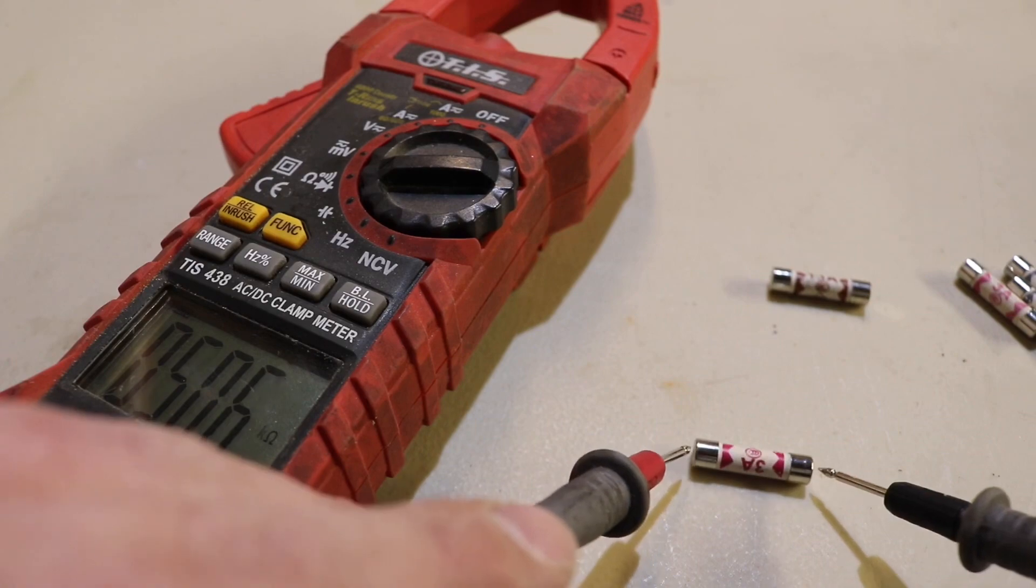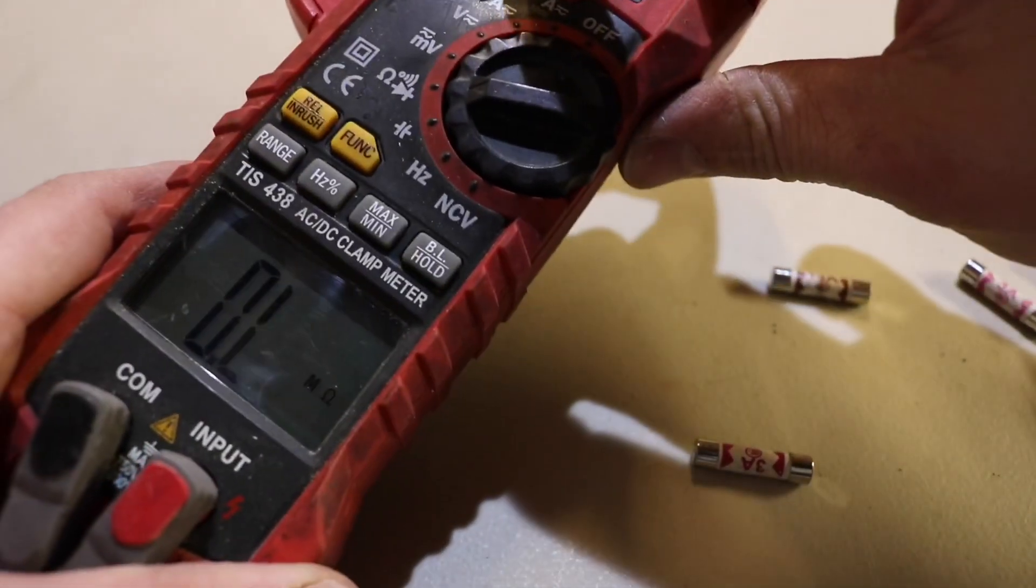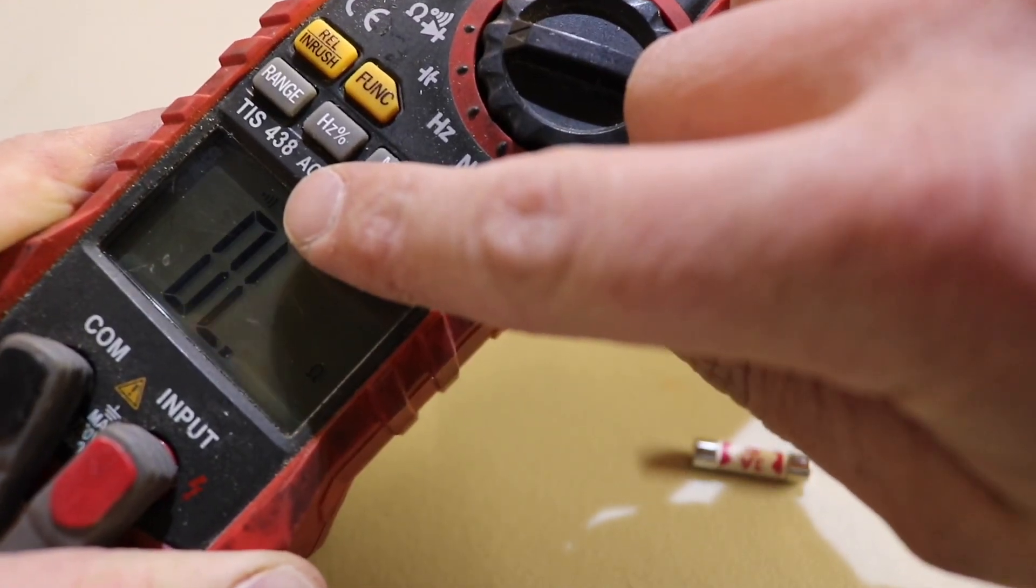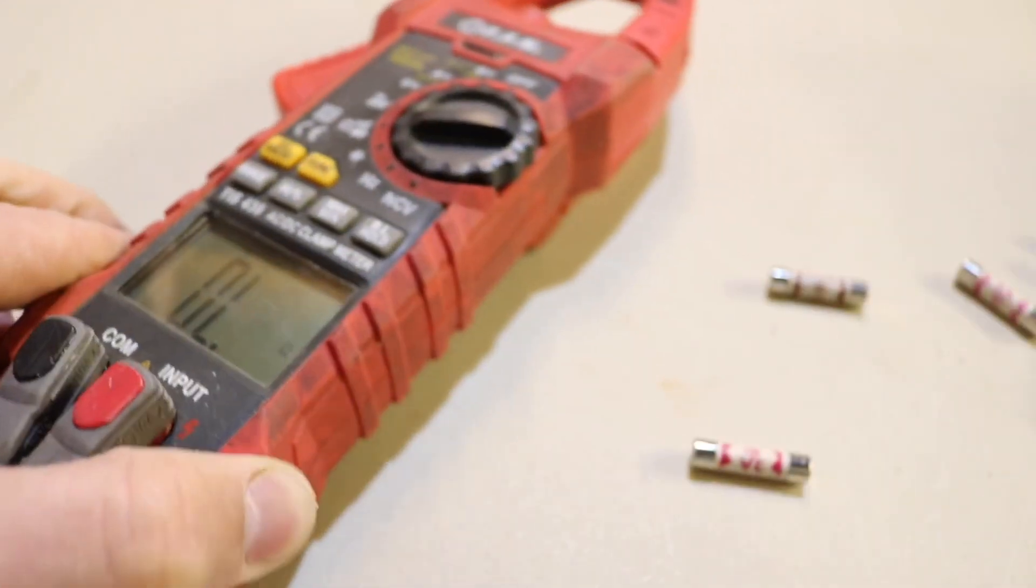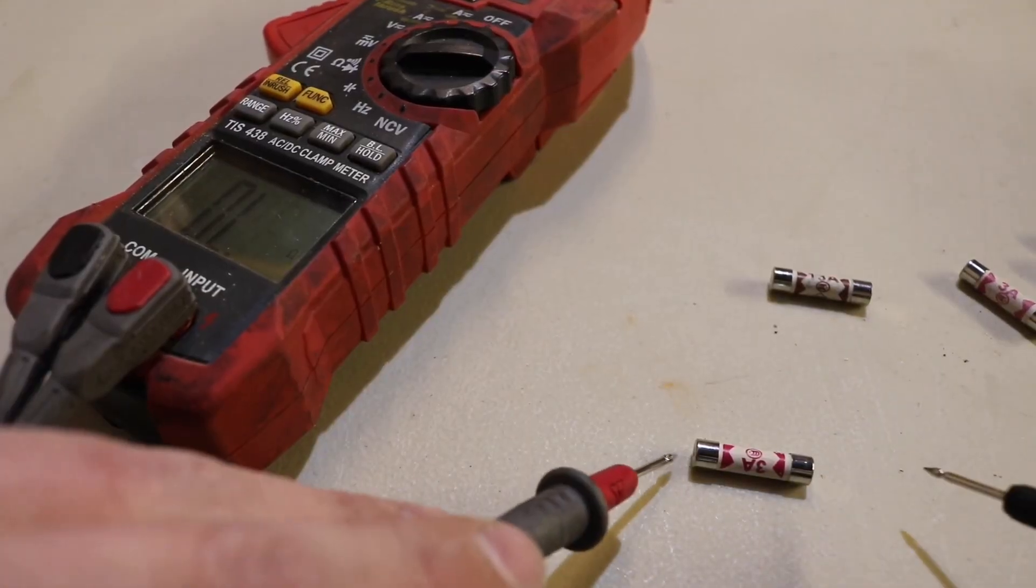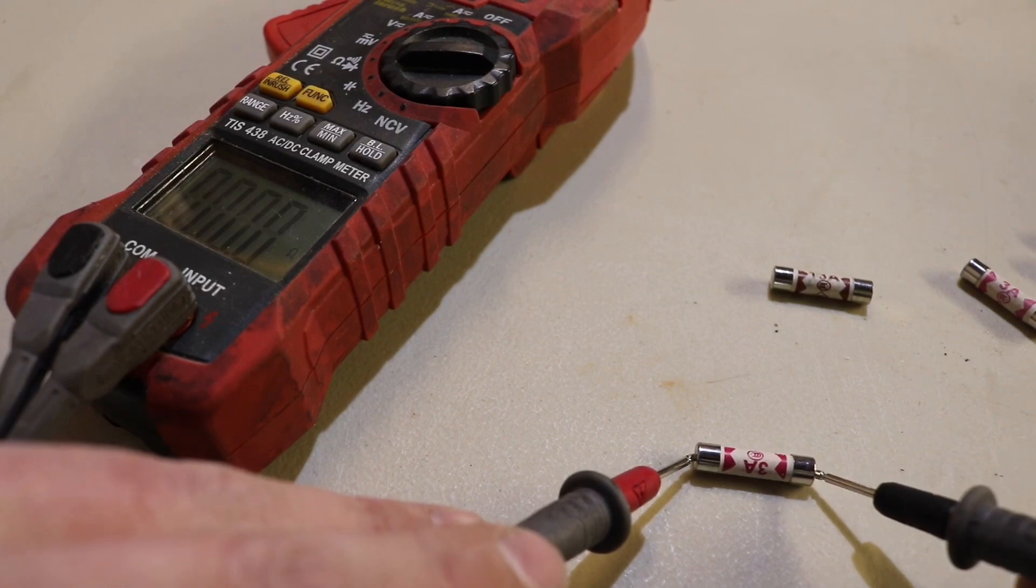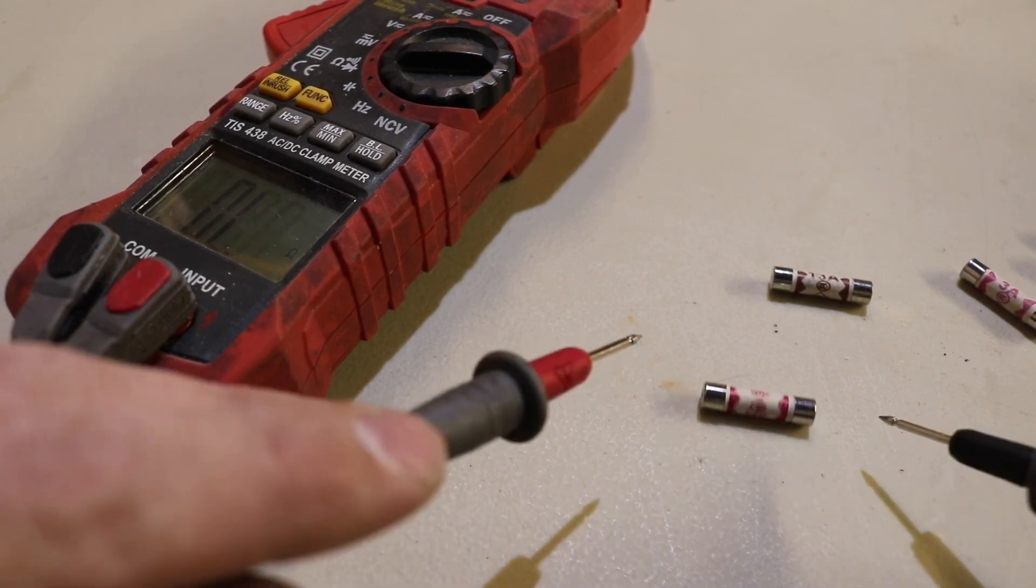However, if you do need an alarm, there is another button on here which switches it from auto to alarm. You can barely see the alarm signal there, and what that does is it gives us an audio alarm to show continuity. Just like that.